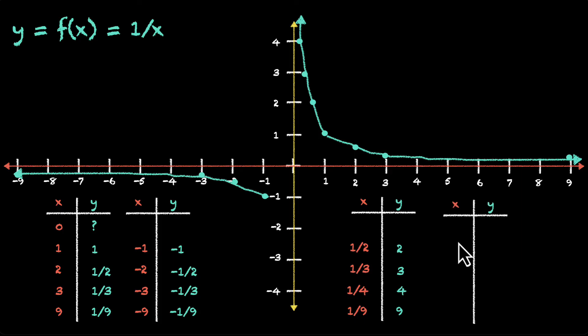Let's plot some points. Let's add some negative values. For minus half, we have minus 2. Minus 1 by 3 will give us minus 3. Minus 1 by 4 will give us minus 4. And if you plot these values, this is what we'll get.